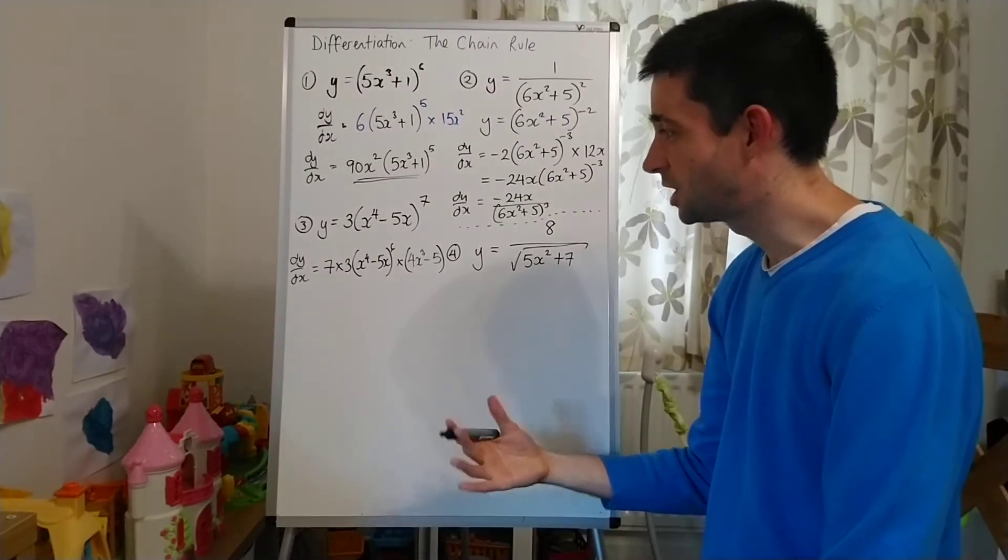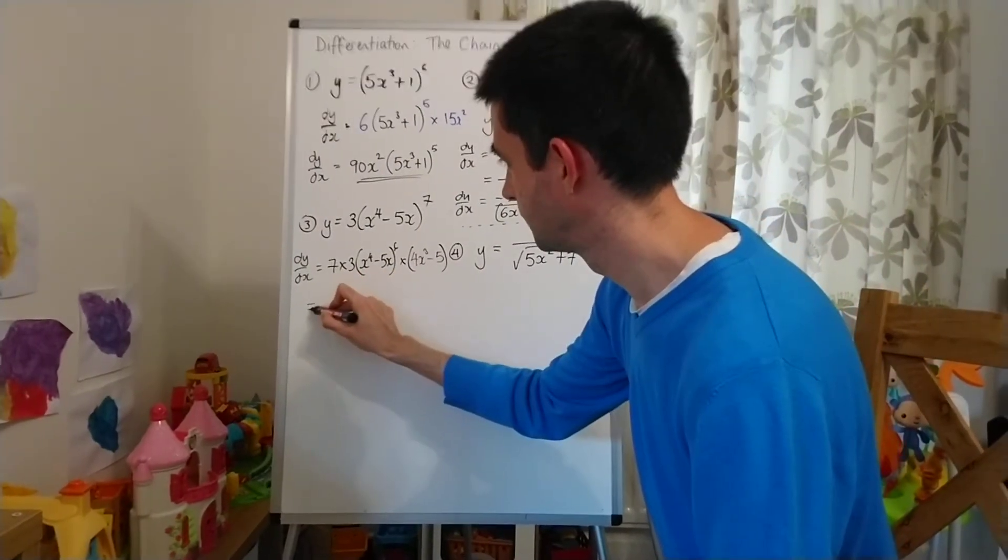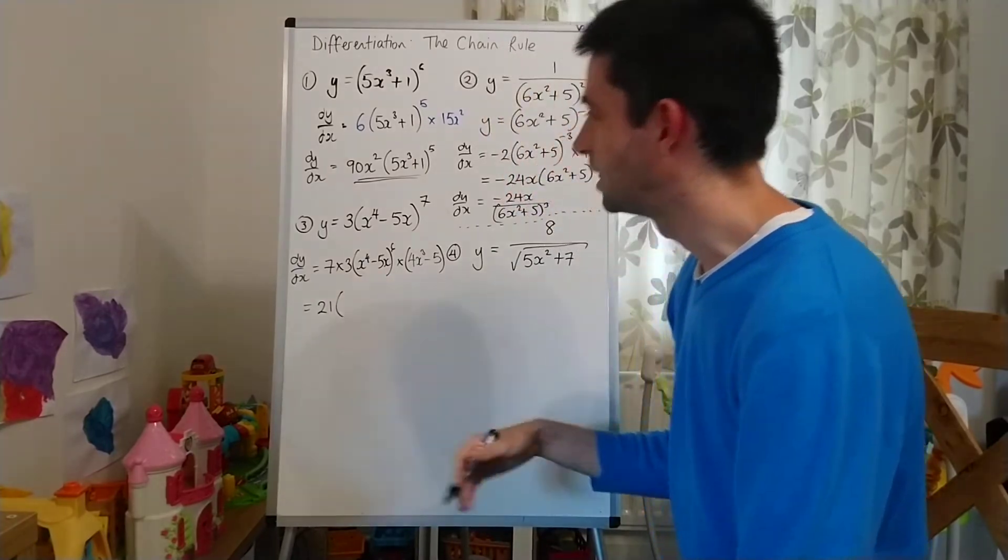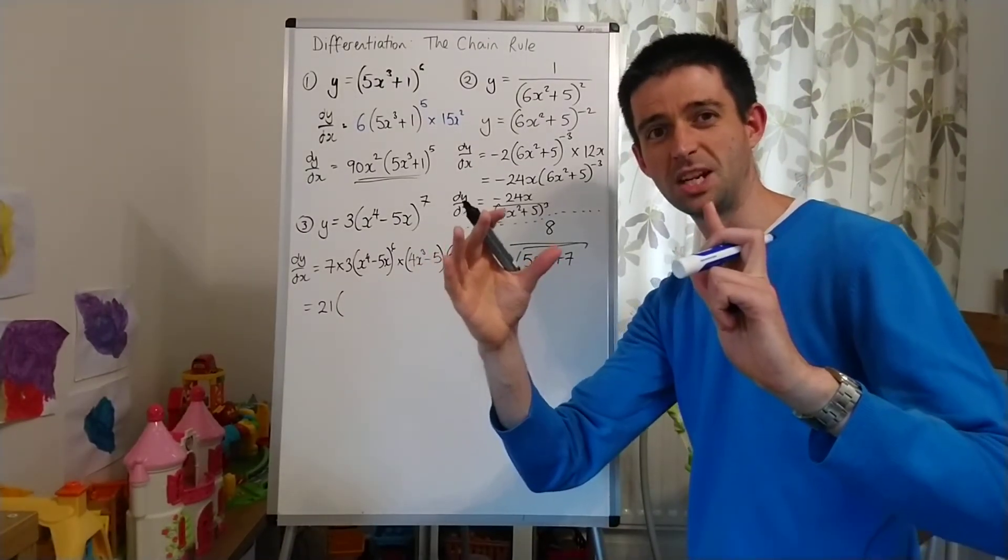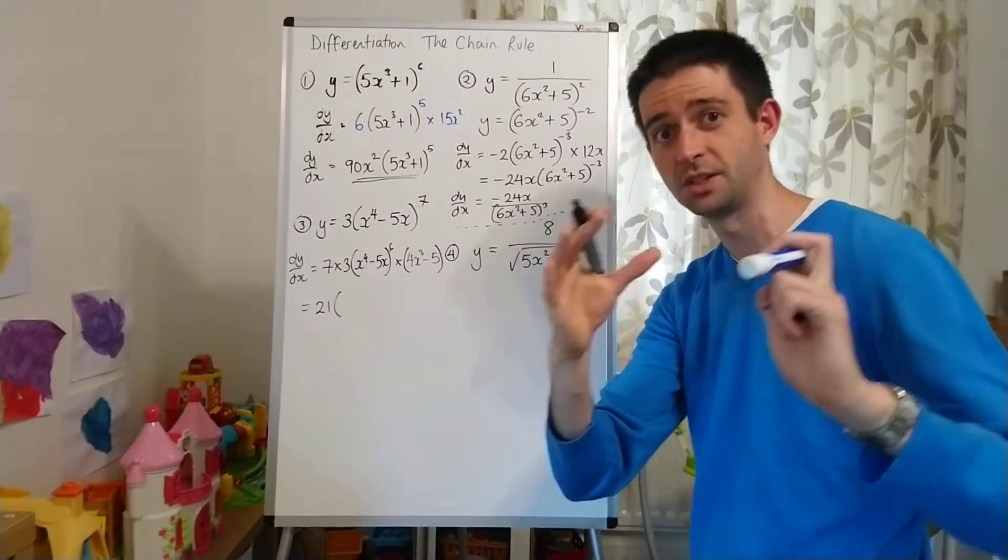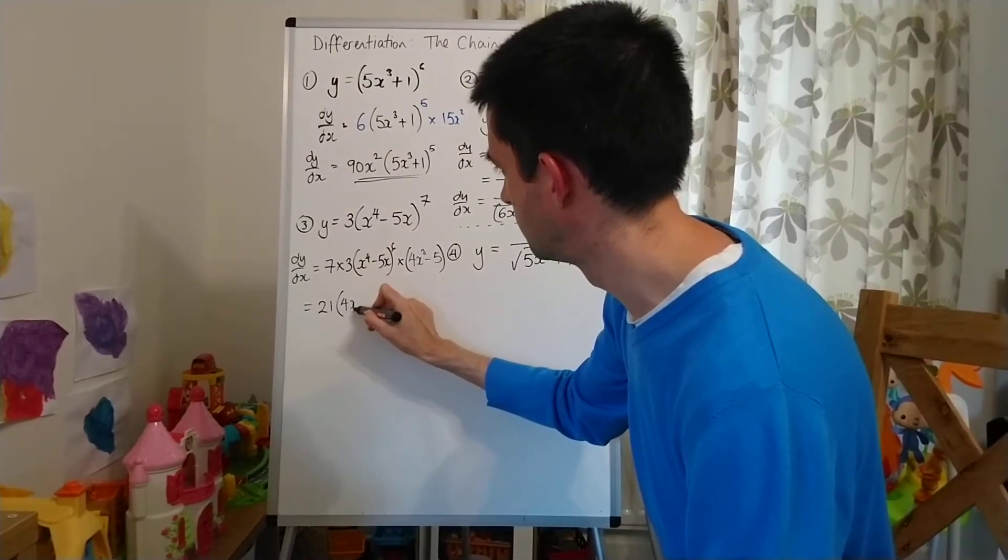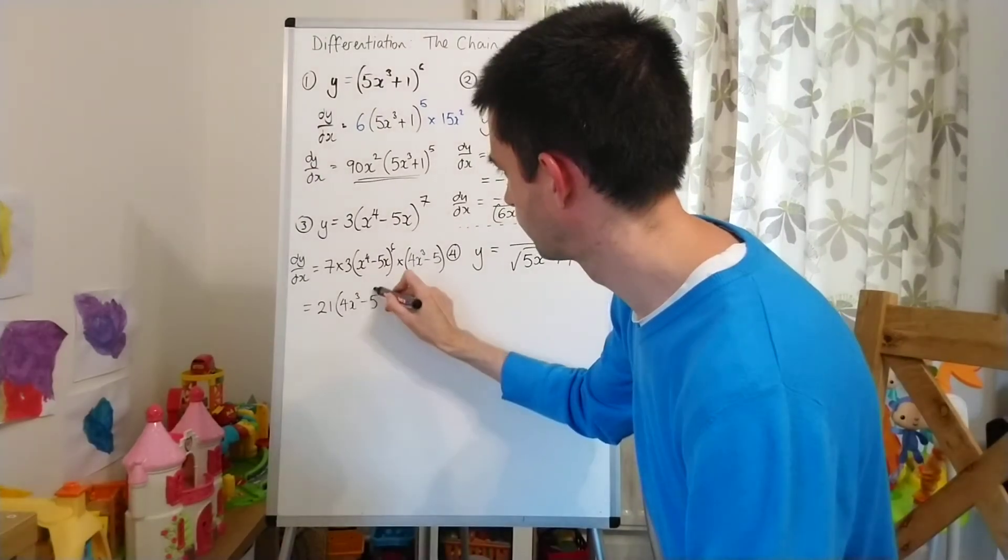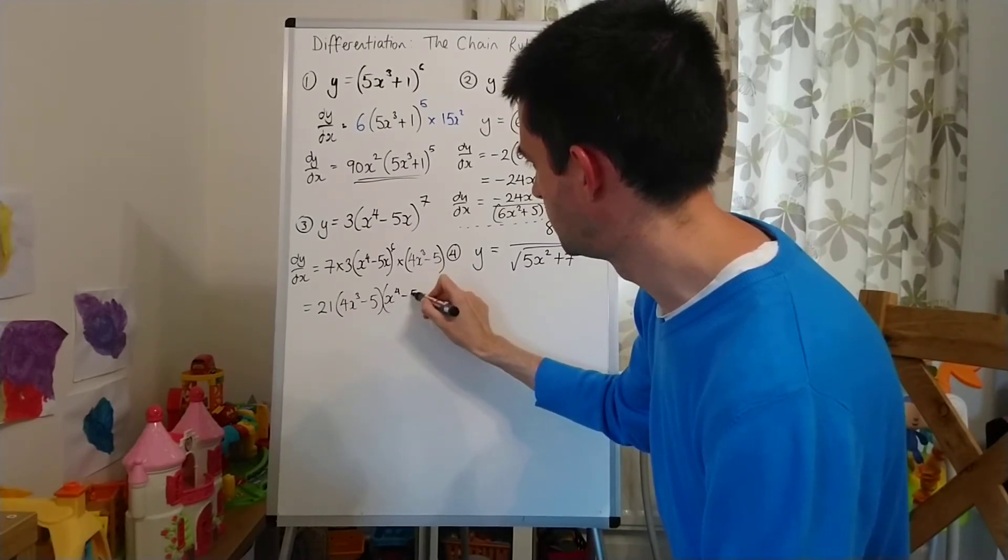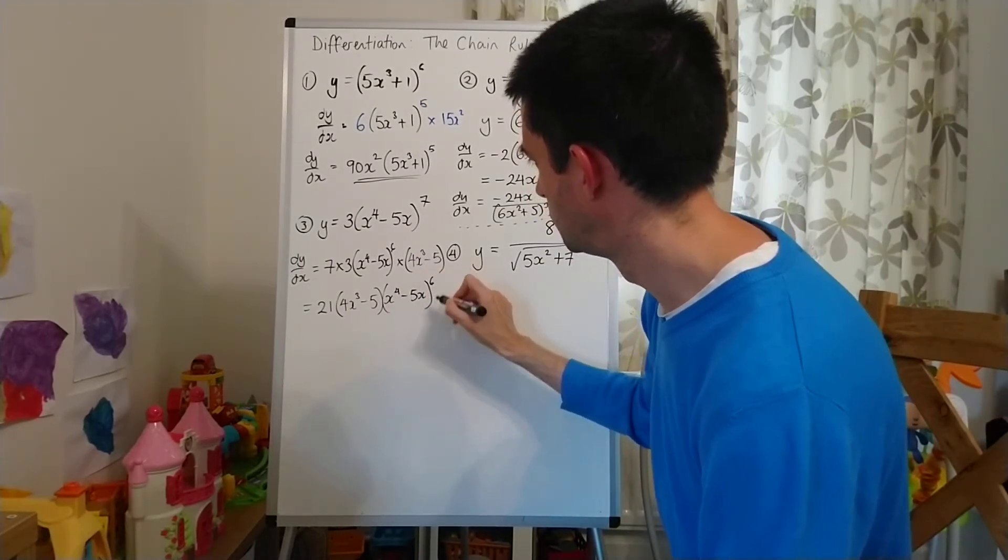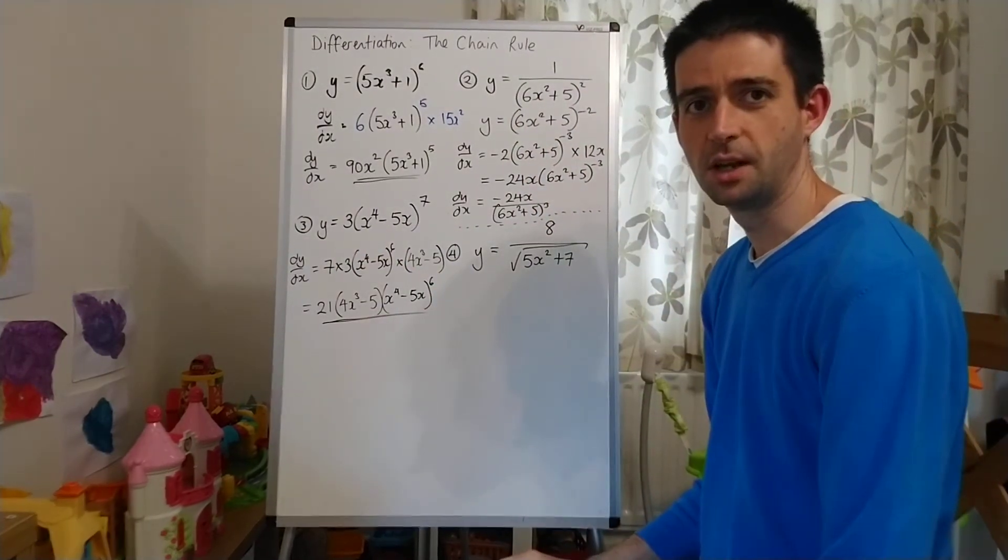In terms of tidying this up, you don't need to get too flash. Let's write 21 instead of 7 times 3. And then general convention for maths is if you've got brackets with powers is to write them in ascending powers order. So smallest power first and then going up. So I'm going to start with (4x³-5). And then after that, I'm going to write (x⁴-5x)⁶. And that is my expression for dy/dx in number 3.